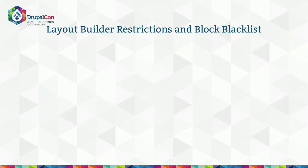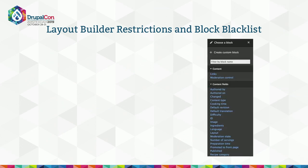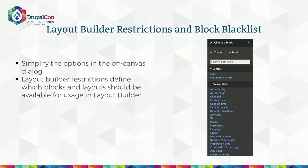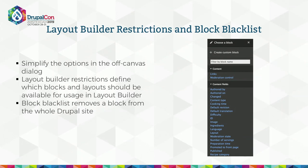The next modules I'm going to talk about do similar tasks: layout builder restrictions and block blacklist. Both are trying to simplify the list of all possible blocks you can add in the layout builder. Layout builder restrictions can limit the blocks per layout and also restrict the available layouts you can add in a particular section. Block blacklist is not specific to layout builder — it's a module that has existed for some time and can disable certain standard blocks for the whole system so nobody will see them anywhere.